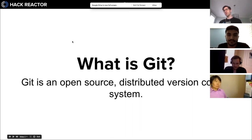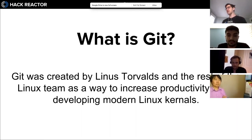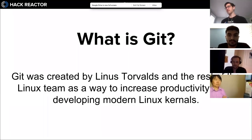Git is an open source distributed version control system. It was created by Linus Torvalds and the rest of the Linux team as a way to increase productivity while developing modern Linux kernels. Some people may have heard of Linus Torvalds - he has some repute in the software development world, especially the open source world.